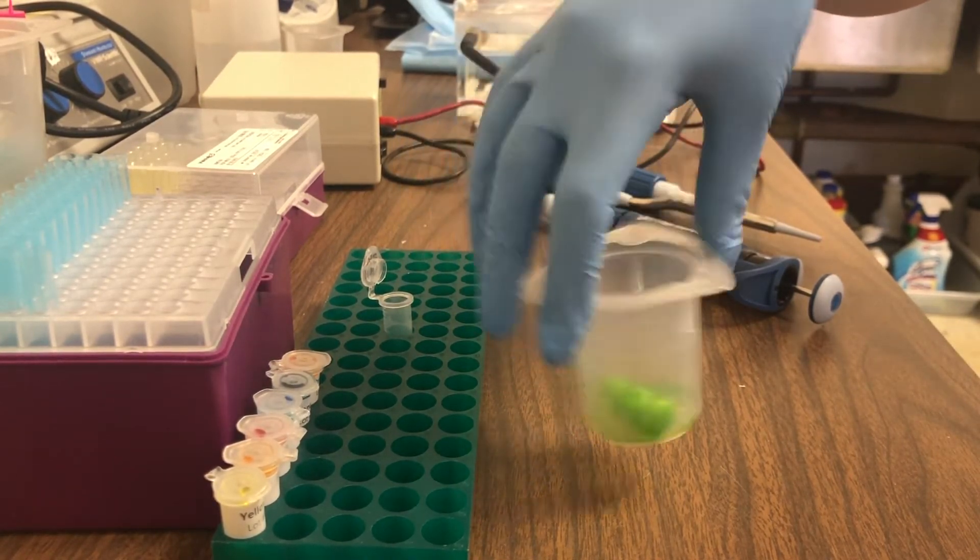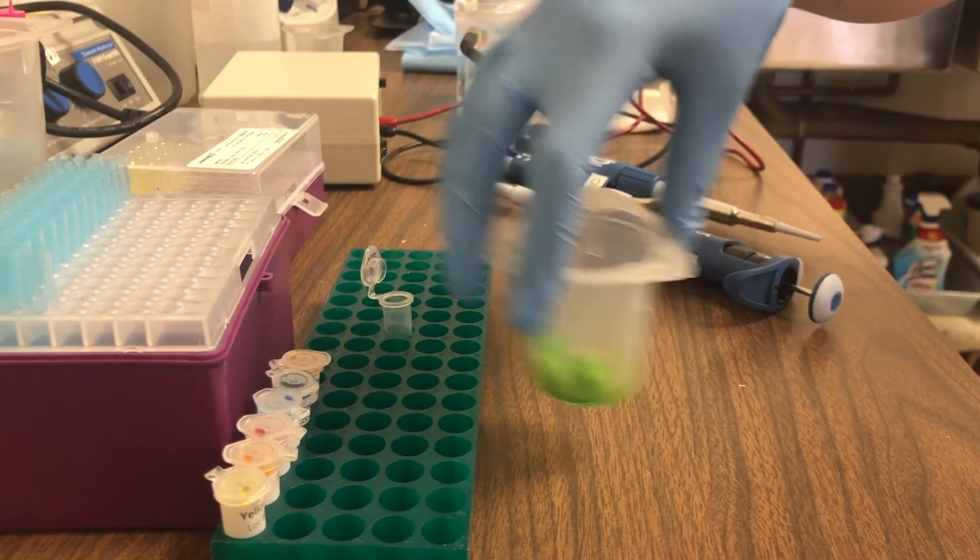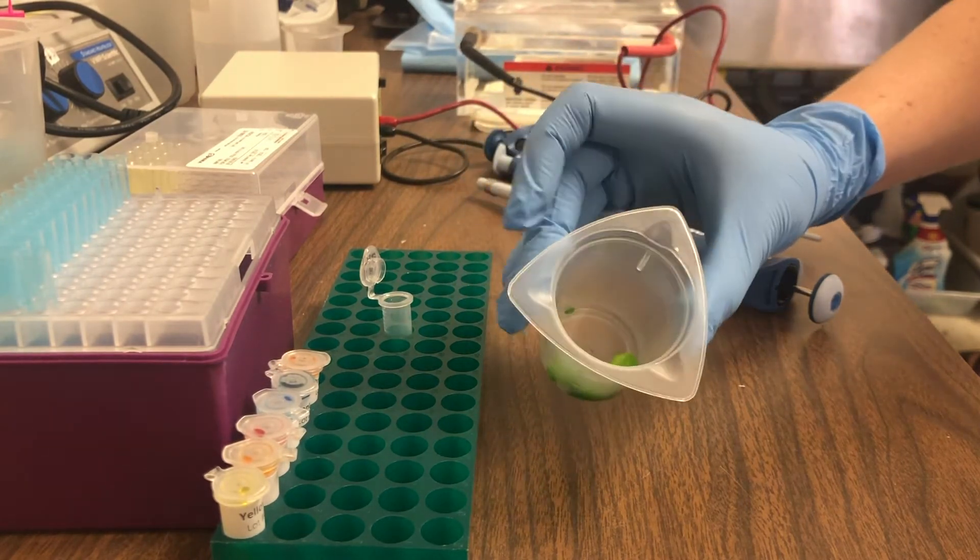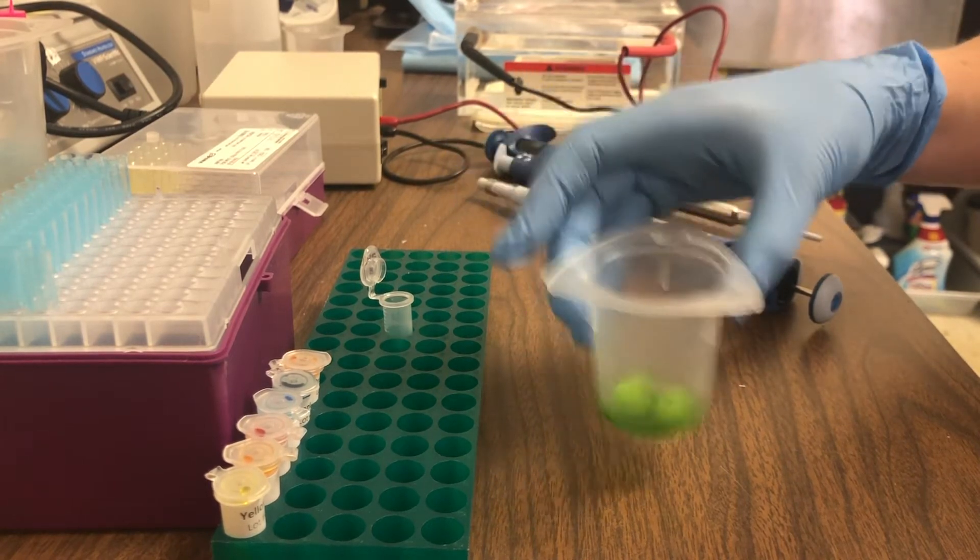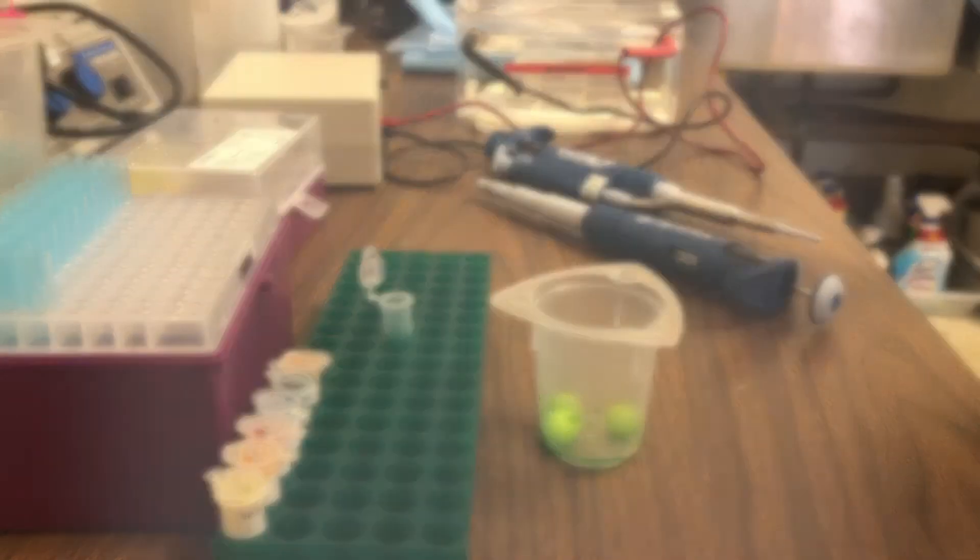What the TAE does is it removes whatever molecule is on the outside of that Skittle and into the TAE. So you'll see here now that most of the color is off the outside of the Skittles and is in the liquid at the bottom of the beaker.